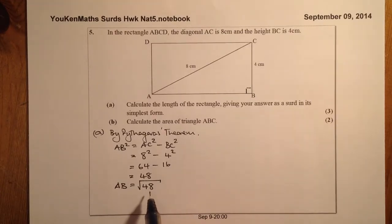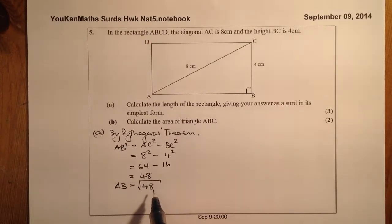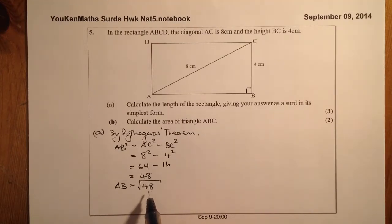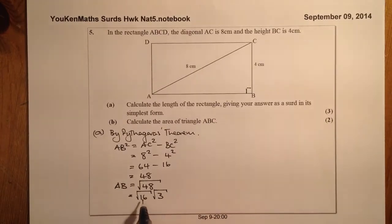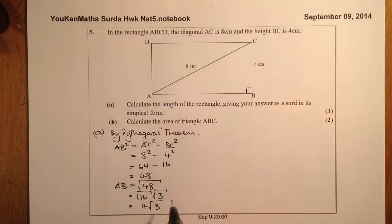So remember simplification — two numbers that multiply together to get 48, where one of them is a square number. So 4 and 12 would work, but that isn't the largest square number I can use. I could use 16 and 3 — those are the ones I would use. So root 16 times root 3, since 16 times 3 gives me 48, and that gives me a final answer of 4 root 3 centimetres for part A. That's three marks.